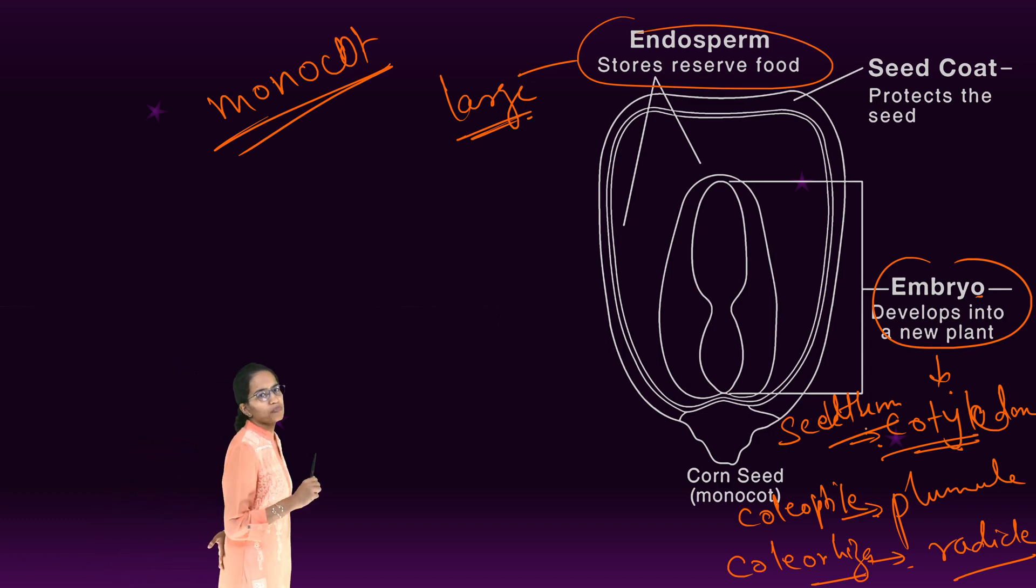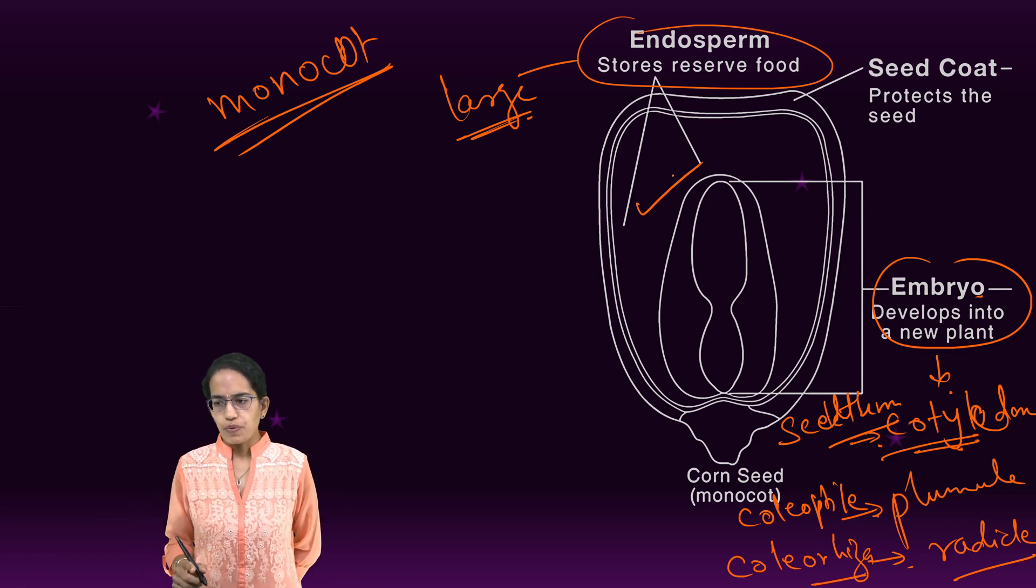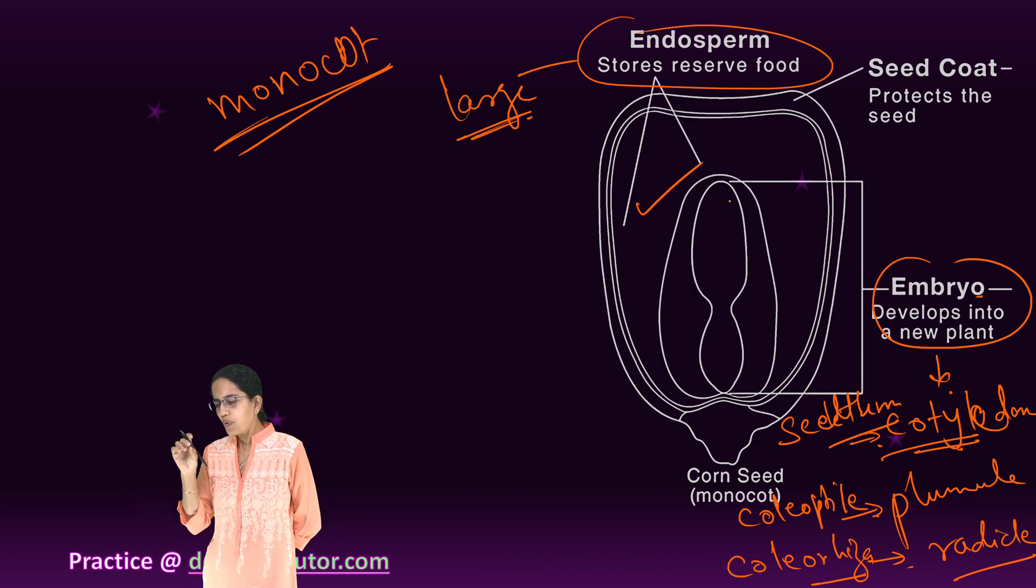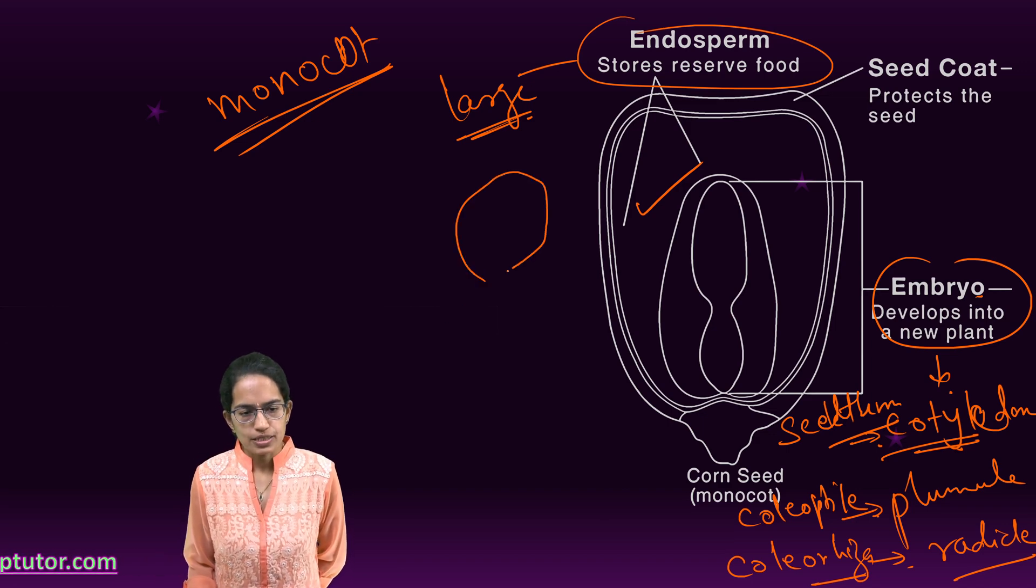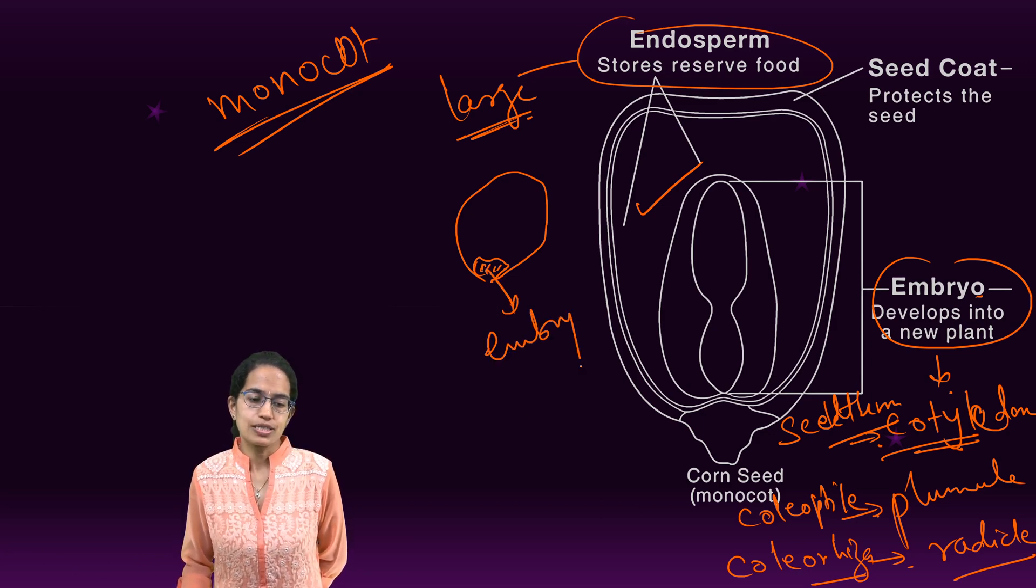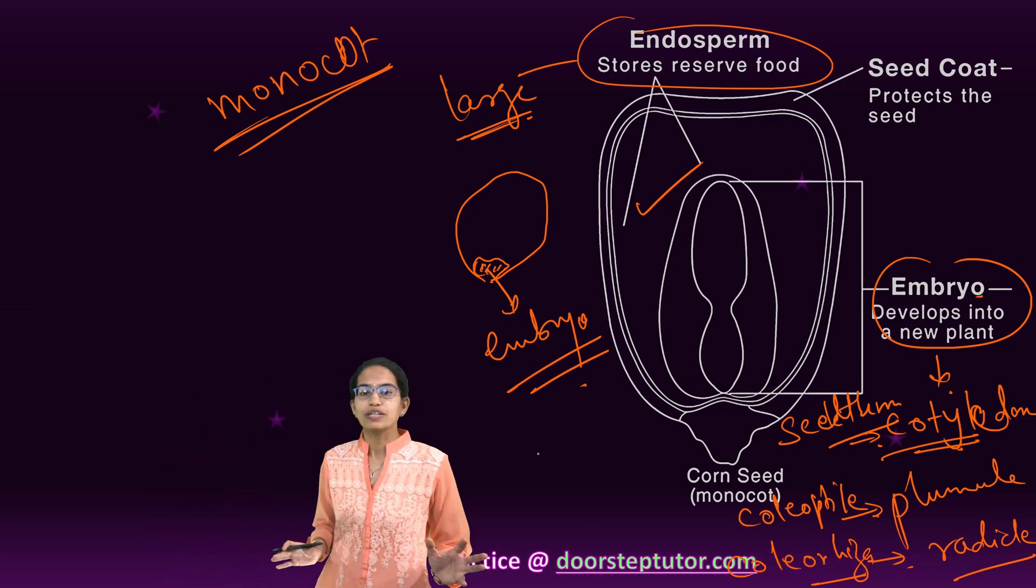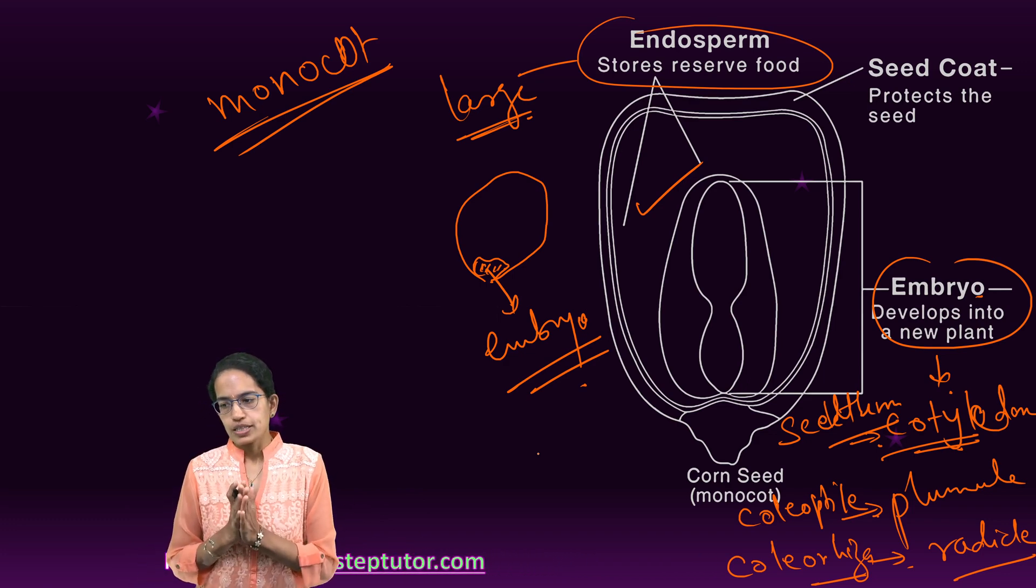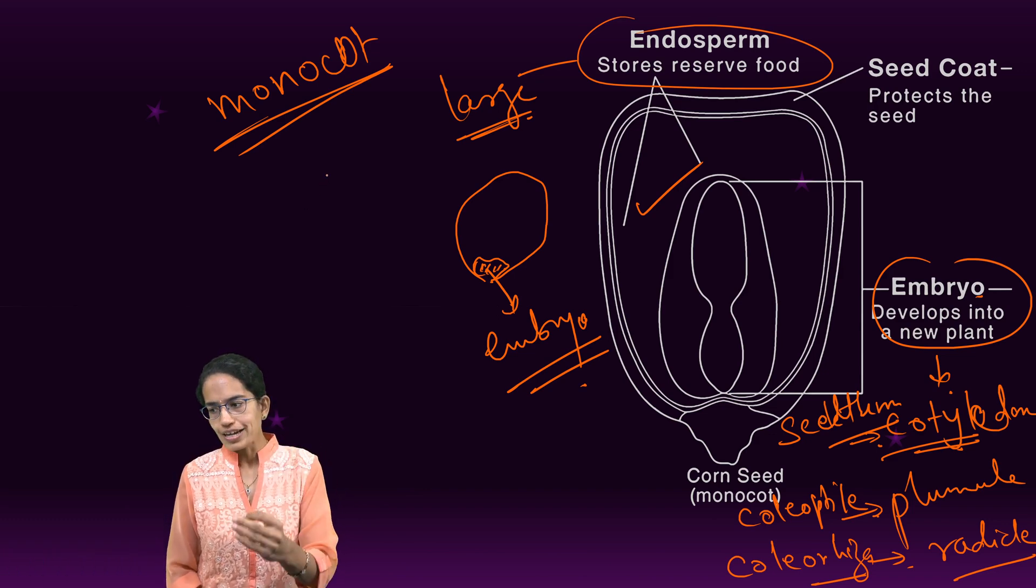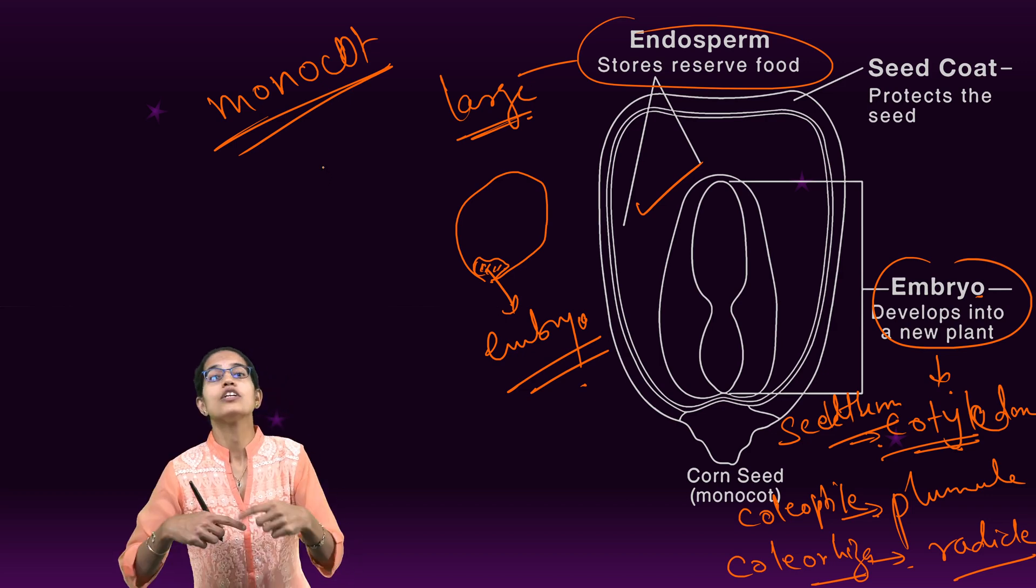Now understanding the endosperm, endosperm is where the food is stored. One very important thing is one side is small, white and opaque. If you look onto the maize seed, you would see a whitish structure at the bottom. This whitish structure at the bottom is the embryo. However, in the case of a dicot, this embryo is large. In monocot, the endosperm is large. In the dicot, the endosperm is absent. In dicot, the plumule is large and folded. In a monocot, the plumule is large and rolled.